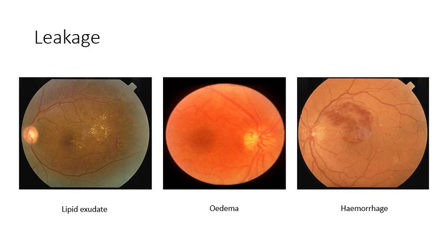Let's start by looking at the signs of leakage, which are lipid exudates, oedema and hemorrhage. The image on the far left shows lipid exudates. These are formed by lipoproteins and lipid-containing macrophages — basically fatty deposits — and as a result they are yellow in colour. Think of butter, for example, which is a fat.